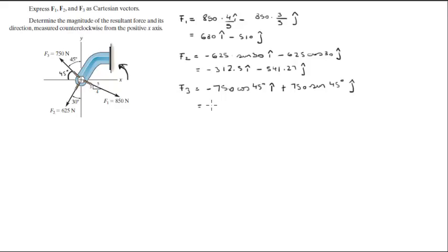you get negative 530.33 in the i direction plus 530.33 in the j direction, because cosine and sine of 45 degrees are equal.